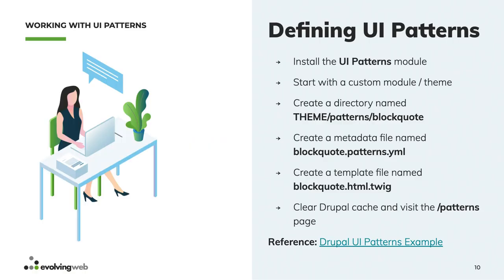I'll be showing a demo of around three to four UI patterns which I made for a small website and a blog article. To get started with UI patterns, the first thing you need to do is install the module. Then you start with a custom theme or module where you place your custom code for the patterns. You create a directory called 'patterns' in that theme or module. Each pattern is a directory containing a YAML file — the declaration — and a template file telling Drupal how the pattern looks. You also have a page to see a list of all patterns.